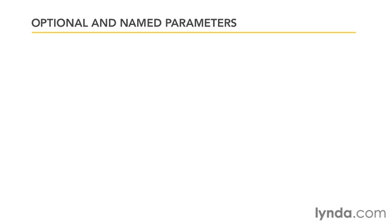The next advanced C# feature we're going to look at are optional and named parameters. Up until now, when we've been calling functions with parameters, we've been supplying values for those parameters, because if we don't, the C# compiler complains that we've left a parameter out of the function call. Optional parameters allow you to define default values for parameters so that if you don't feel like passing in a value for that parameter, you don't have to.